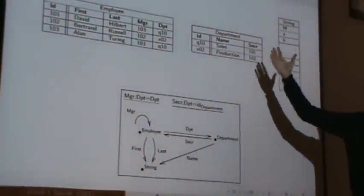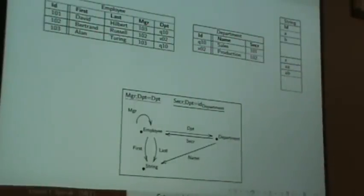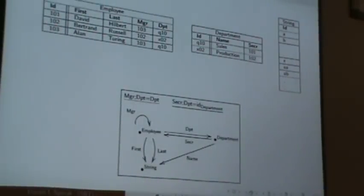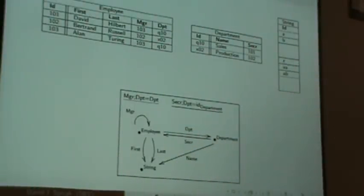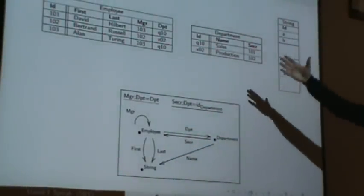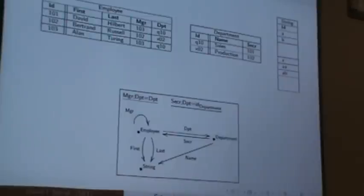And this category encodes the foreign key, primary key relationships - and the primary key by the way is the identity arrows on each thing. So this category down here encodes the structure of this database schema.